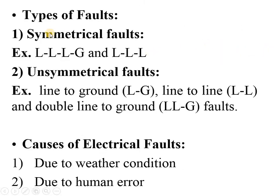Moving to the types of fault — mainly in the power system, symmetrical faults are observed. The examples are triple line-to-ground fault and triple line fault, both called symmetrical faults. The percentage of symmetrical faults is very less — about 5 to 10 percent of faults fall under the category of symmetrical fault.